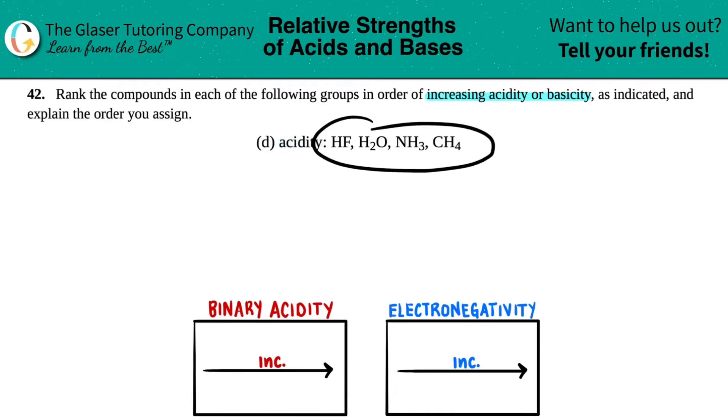Cool, so the first thing is we have to figure out what types of acids these are. For every one of them it seems like I have a hydrogen, doesn't matter whether it's in the front or the back, but then we have some other element. We only have two elements in our compound, and two is bi, so it's a binary acid.